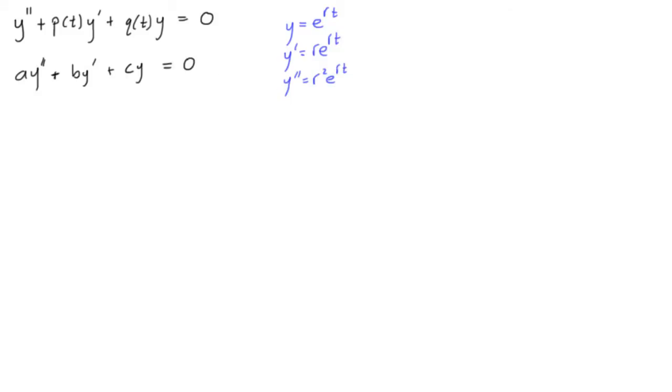So if we take these and plug them back into this equation here, we're going to have a times y'', which is r²e^(rt), plus b times y', which is re^(rt), plus c times y, which is e^(rt), and this is all equal to zero.